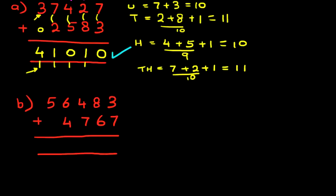And we've got the equals sign at the bottom. Again, let's label the columns. We've got units, tens, hundreds, thousands, and TTH is 10 thousands.